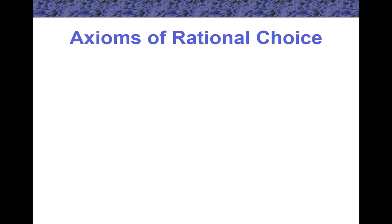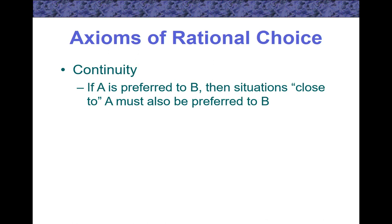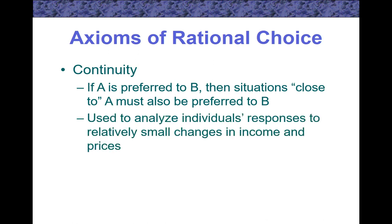Continuity: If A is preferred to B, then situations close to A must also be preferred to B. This is used to analyze individuals' responses to relatively small changes in income and prices.